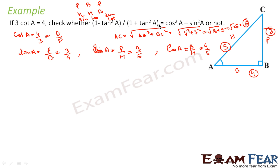Now I have to find whether (1 - tan² A)/(1 + tan² A) equals the right side. LHS equals (1 - tan² A)/(1 + tan² A), which is (1 - (3/4)²)/(1 + (3/4)²). This becomes (1 - 9/16)/(1 + 9/16), which gives you 7 by 25.